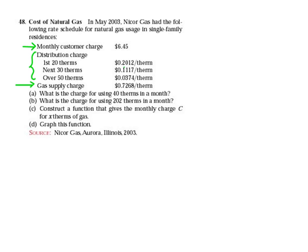In Part A, it says: what is the charge for using 40 therms in a month? Looking at what we have here, everybody has to pay the $6.45 no matter what, just because we're a customer. Then we have to figure out how much we owe depending on how much we used. We're using 40 therms this time. Well, the first 20 we get charged at this rate.